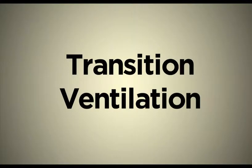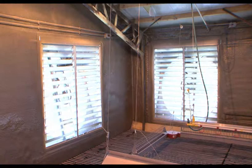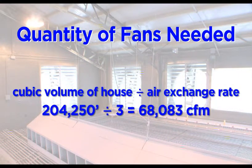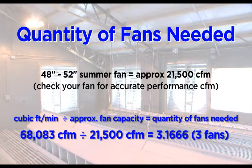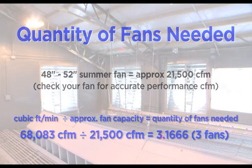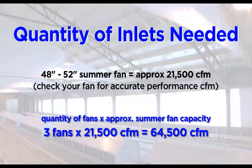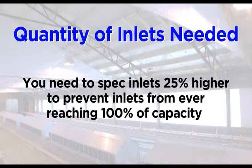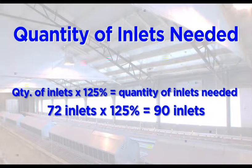Let's talk about using TJP inlets with transition ventilation. During transition ventilation, fan volume equals 1 air exchange every 3 minutes. To determine the number of fans needed, take the cubic volume of the house and divide by 3. Then divide by how much air one summer fan can displace in cubic feet per minute — 21,500 CFM. Always round up or down to the nearest whole number. To determine the number of inlets needed, take the number of fans and multiply by the amount of air displaced by one summer fan in CFM, then divide by inlet CFM. Allow 900 CFM per inlet. You need to spec inlets 25% higher to prevent inlets from ever reaching 100% of capacity. 72 inlets times 125% equals 90 inlets.